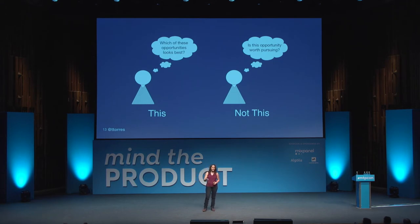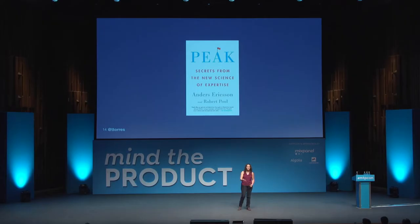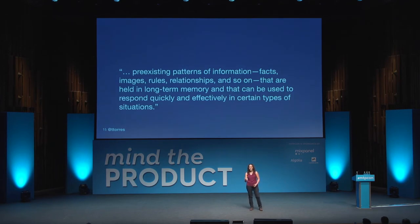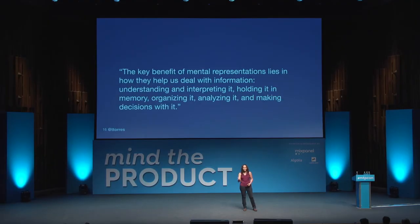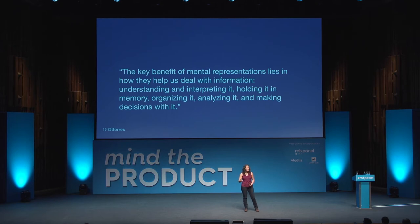I want to introduce you to Anders Ericsson, who wrote the book Peak: Secrets from the New Science of Expertise. Ericsson spent his whole life looking at the difference between experts and novices. One of the key differences he found was that experts have more sophisticated mental representations than novices. He defines a mental representation as a pre-existing pattern of information held in long-term memory that helps us respond quickly and effectively in different situations. The key benefit is it helps us understand and interpret information, hold it in memory, and organize and analyze it so we can make better decisions.